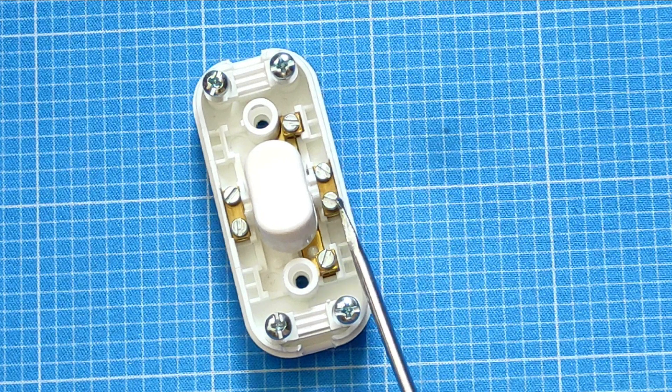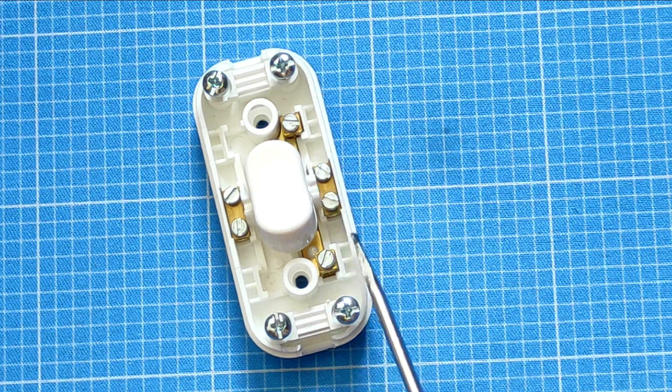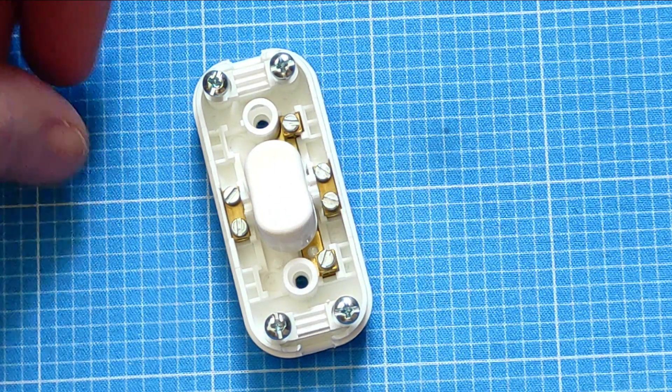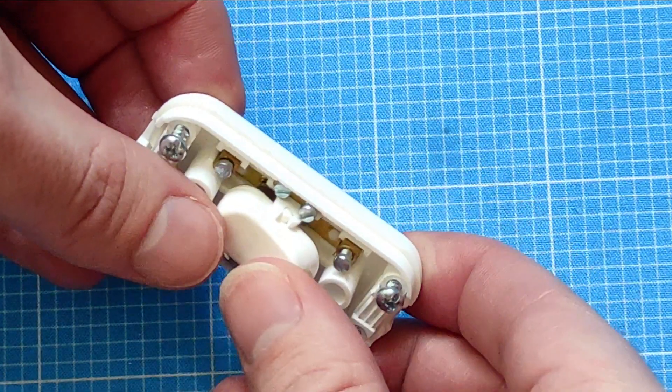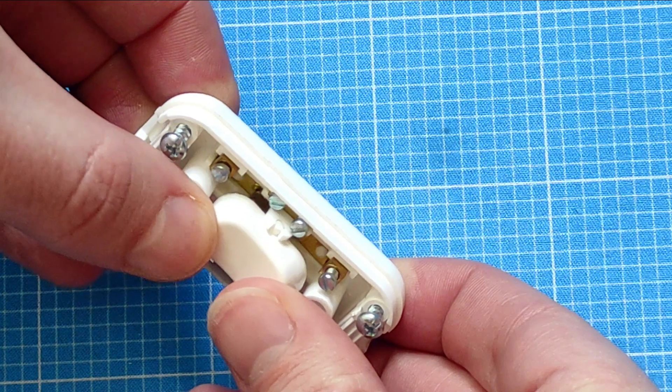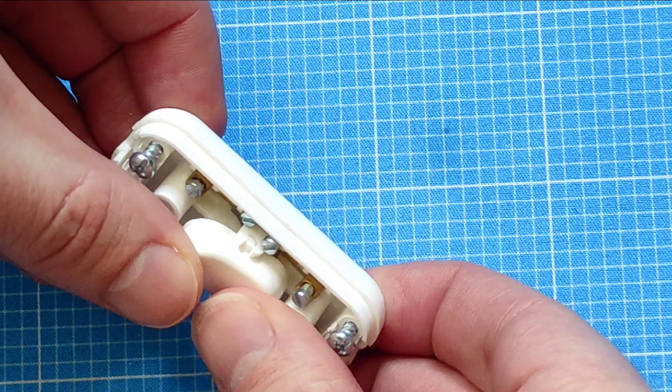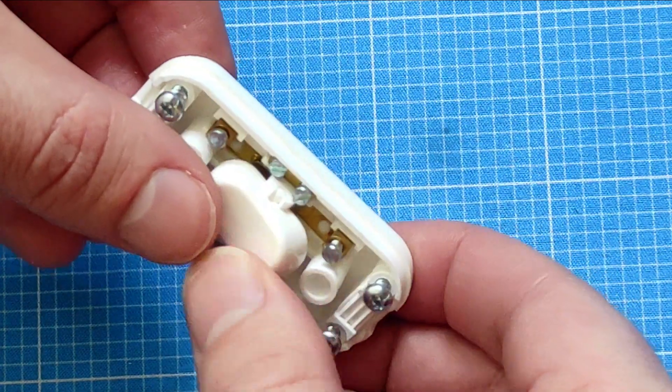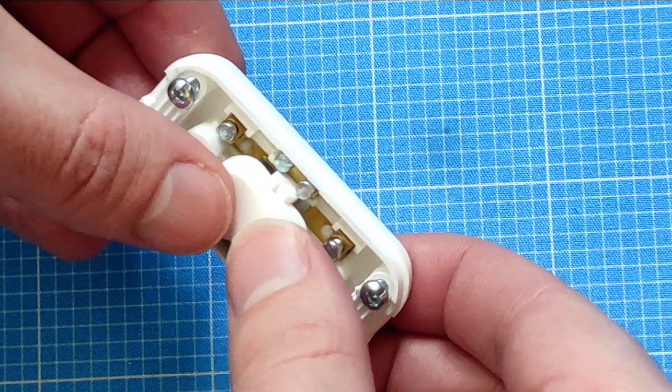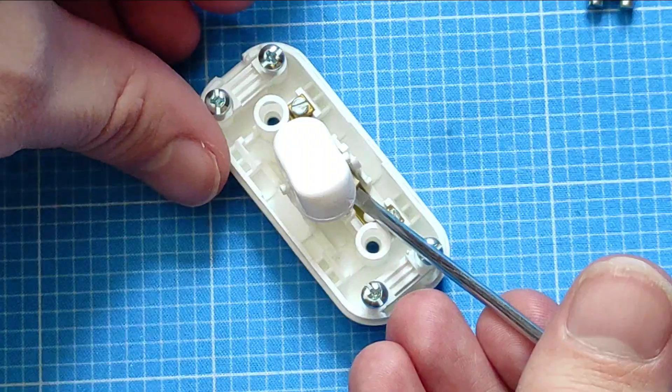This one here that's not getting any connection up difference there, this one on the side that goes to the neutral, the blue one. And here you can see that we are actually cutting or connecting the current here, and that is for the brown bar, the brown wire, the live one will go here.